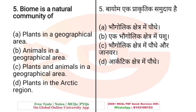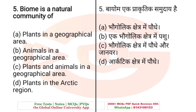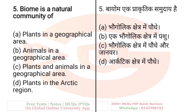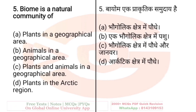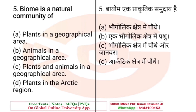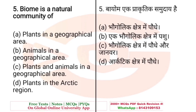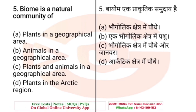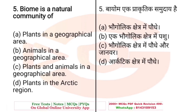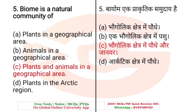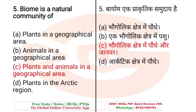Question: A biome is a natural community of — A. Plants in a geographical area, B. Animals in a geographical area, C. Plants and animals in a geographical area, D. Plants in the Arctic region. For Hindi medium students, a Hindi translation is provided. The right answer is C — plants and animals in a geographical area are also called the natural community of a biome.